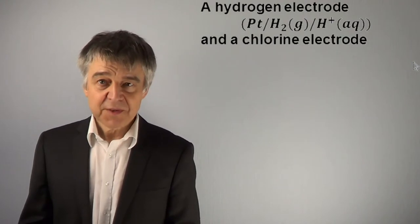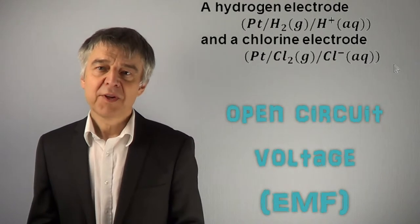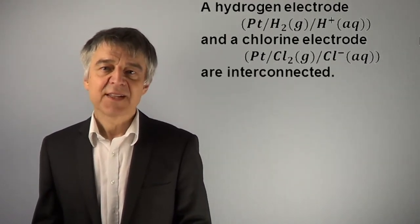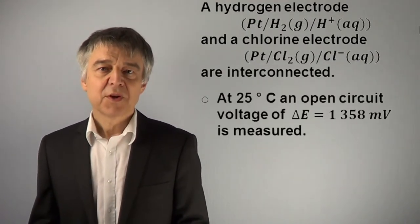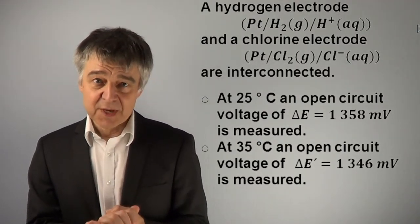At 25 degrees Celsius, an open circuit voltage of 1358 mV is measured. At 35 degrees Celsius, an open circuit voltage of 1346 mV is measured.